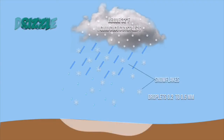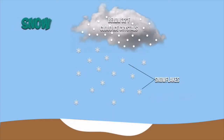Snow occurs when up in the clouds or upper atmosphere the temperature is lower than 32 degrees Fahrenheit. We have frozen water droplets that come down as crystals, which we call snowflakes. For that snow to stick on the Earth's surface, the surface also has to be cold enough to allow the snow to accumulate. If the surface is warm, that snow will melt right away.